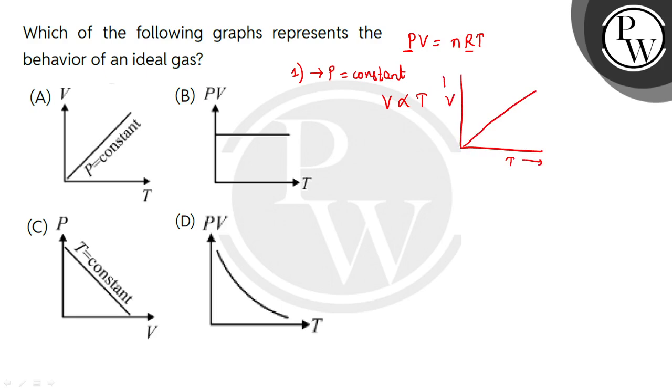So the first graph shows the behavior of an ideal gas. A is our correct option.